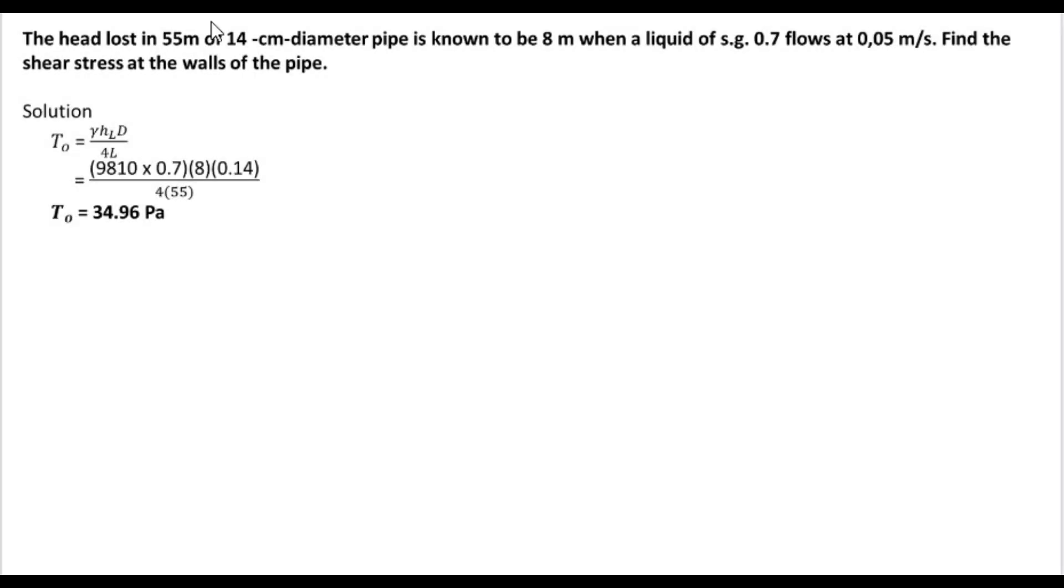Hello everyone, so we have a sample problem in chapter 7. The head loss in 55 meters of 14 cm diameter pipe is known to be 8 meters when a liquid of specific gravity 0.7 flows at 0.05 meters squared. We need to find the shear stress at the walls of the pipe.